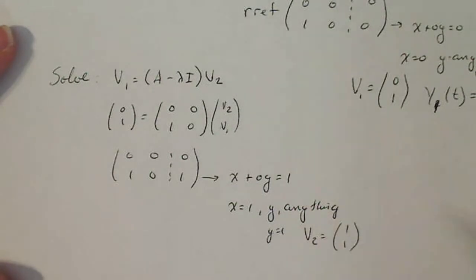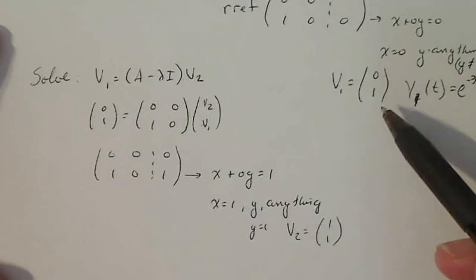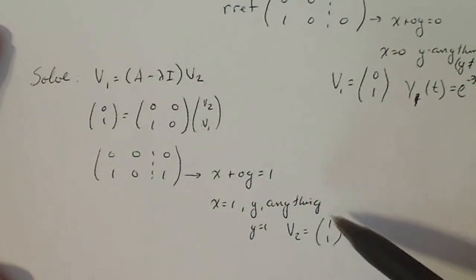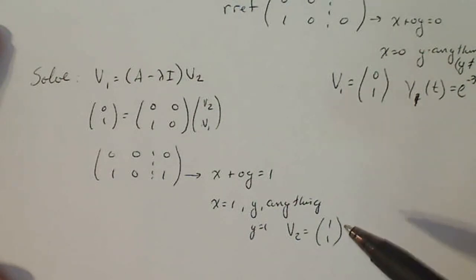Now, no matter what you choose for y, v2 and v1 are going to be linearly independent, no matter what. Because this is (0,1). Even if I had (1,0), that's linearly independent. No matter what you choose for y, as long as x is equal to 1, these two guys are linearly independent, which is what you want.